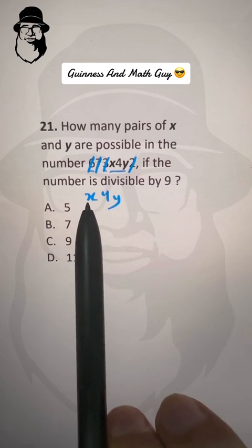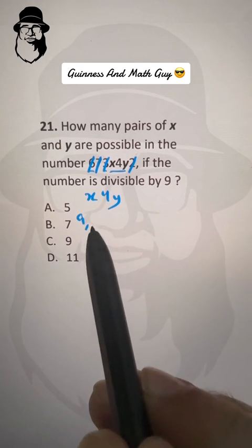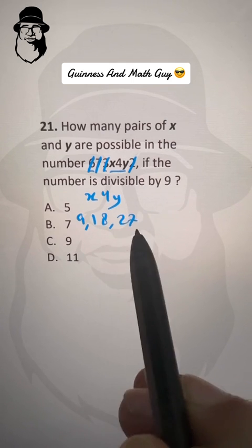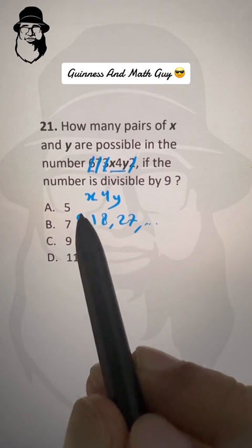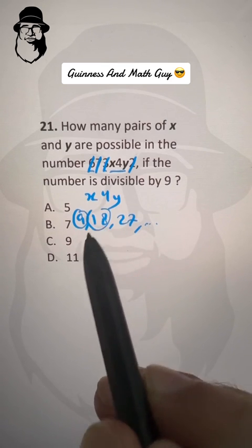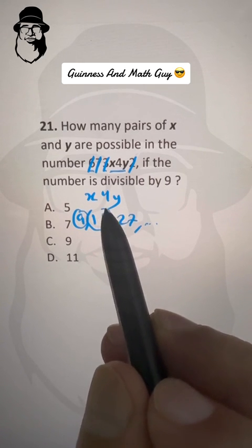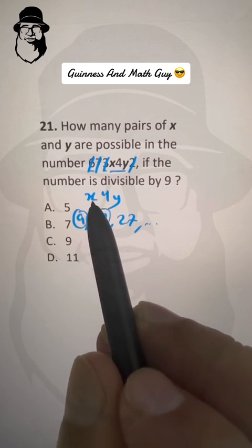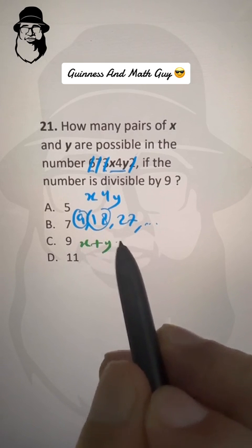Now X plus 4 plus Y must be 9 or 18 or 27, any multiple of 9. So in this case, it must be 9 or 18. So we already have 4 here. 4 plus what is 9? 4 plus 5 is. So either X plus Y is 5.